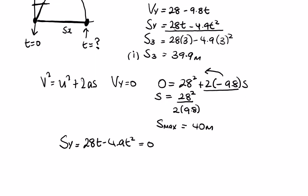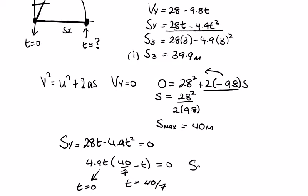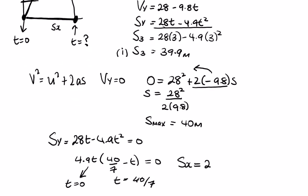Taking 4.9t outside: 4.9t(40/7 − t) = 0. So t = 0 (initial) and t = 40/7. Therefore s_x = 21 × 40/7 = 120 meters.